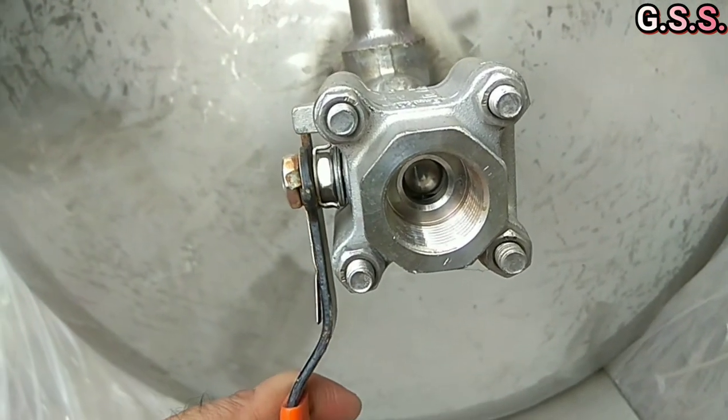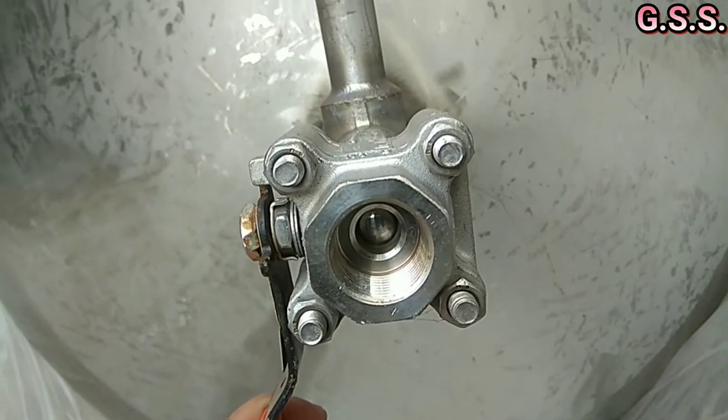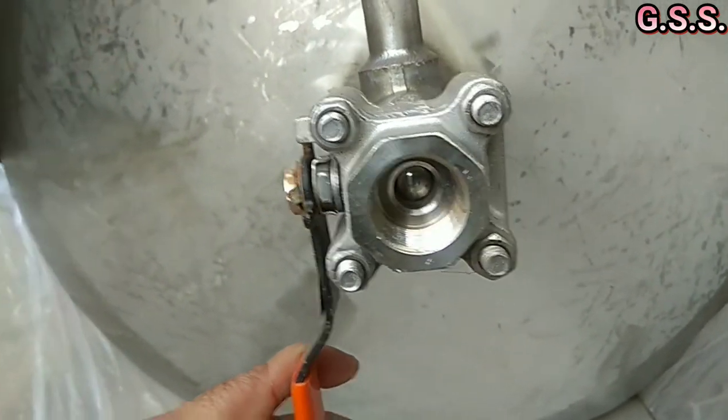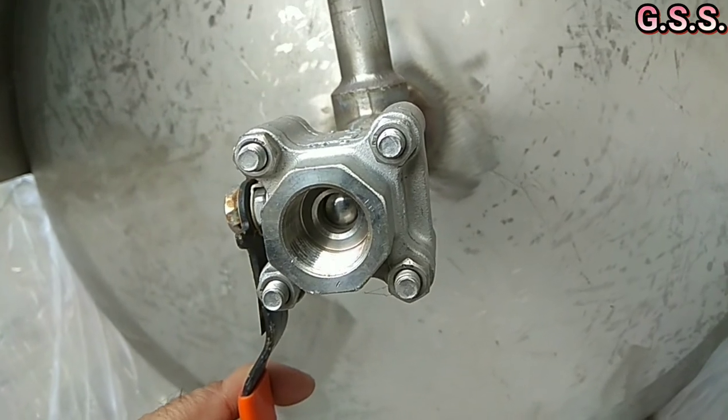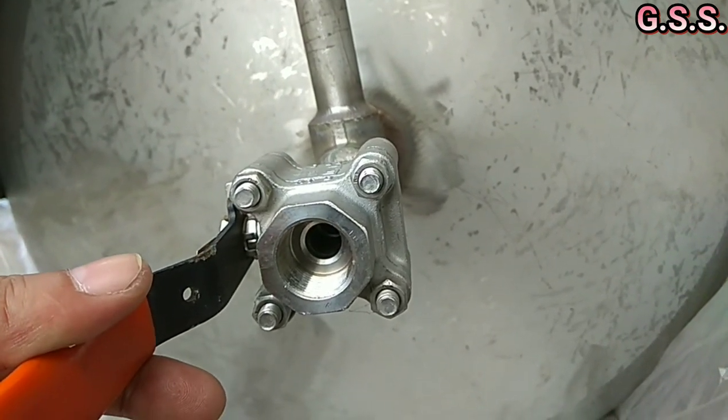Through this type of reduced bore ball valve, flow velocity will be higher and pressure drop will be greater. Also, due to the reduced bore, debris or particles will accumulate in front of the ball.